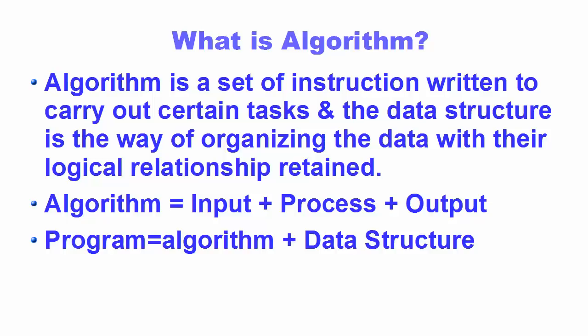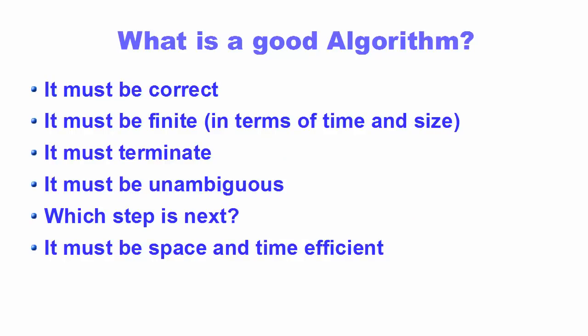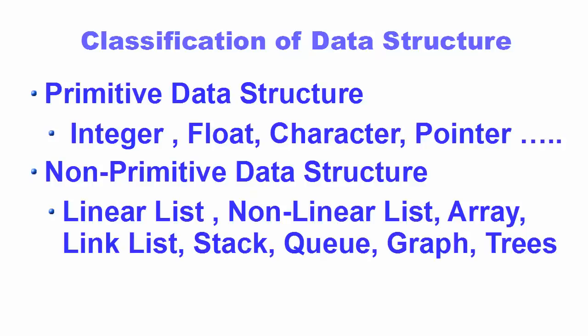A program is the combination of algorithm and data structure. A good algorithm must be correct, finite in terms of time and size, and it must terminate — meaning it ends somewhere. A good algorithm must be unambiguous, meaning it gives you a clear idea of which next step it will take. A good algorithm must also be space and time efficient, which we will discuss in later videos.